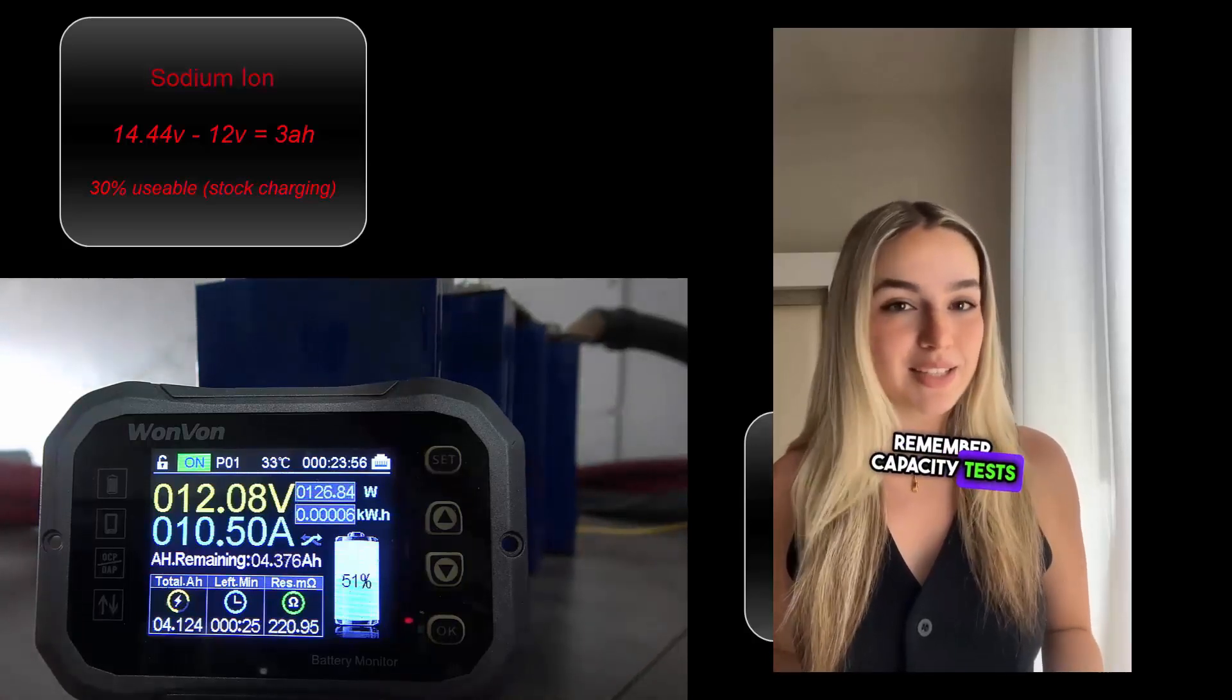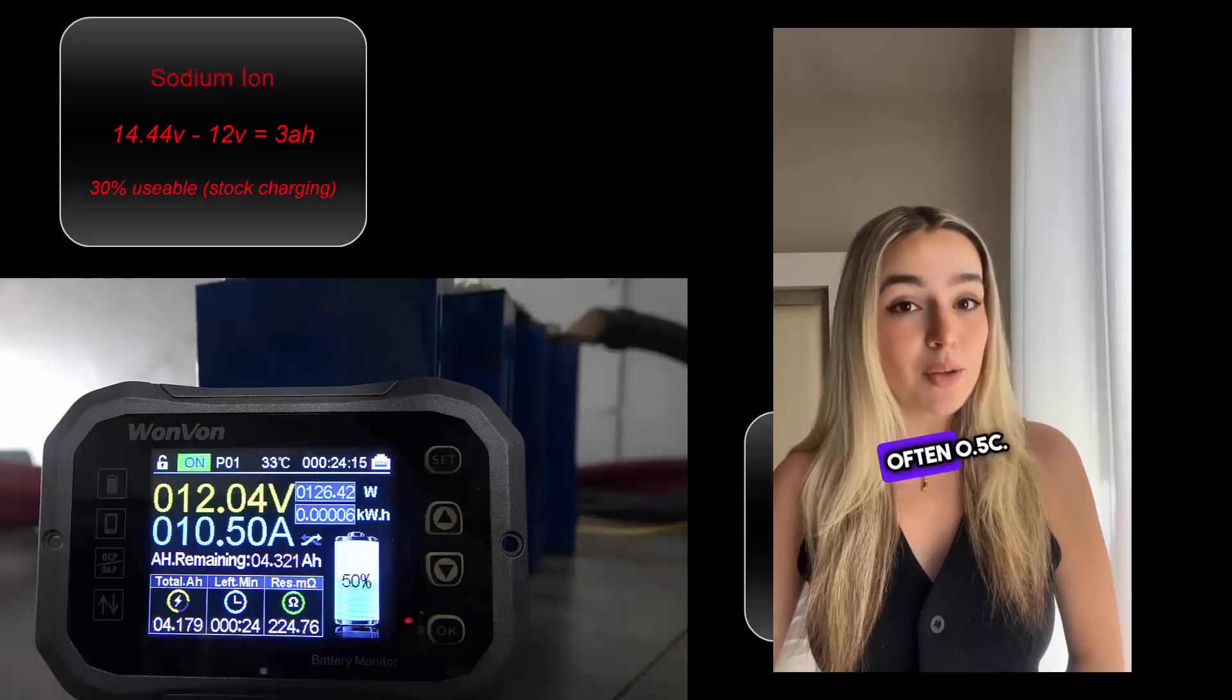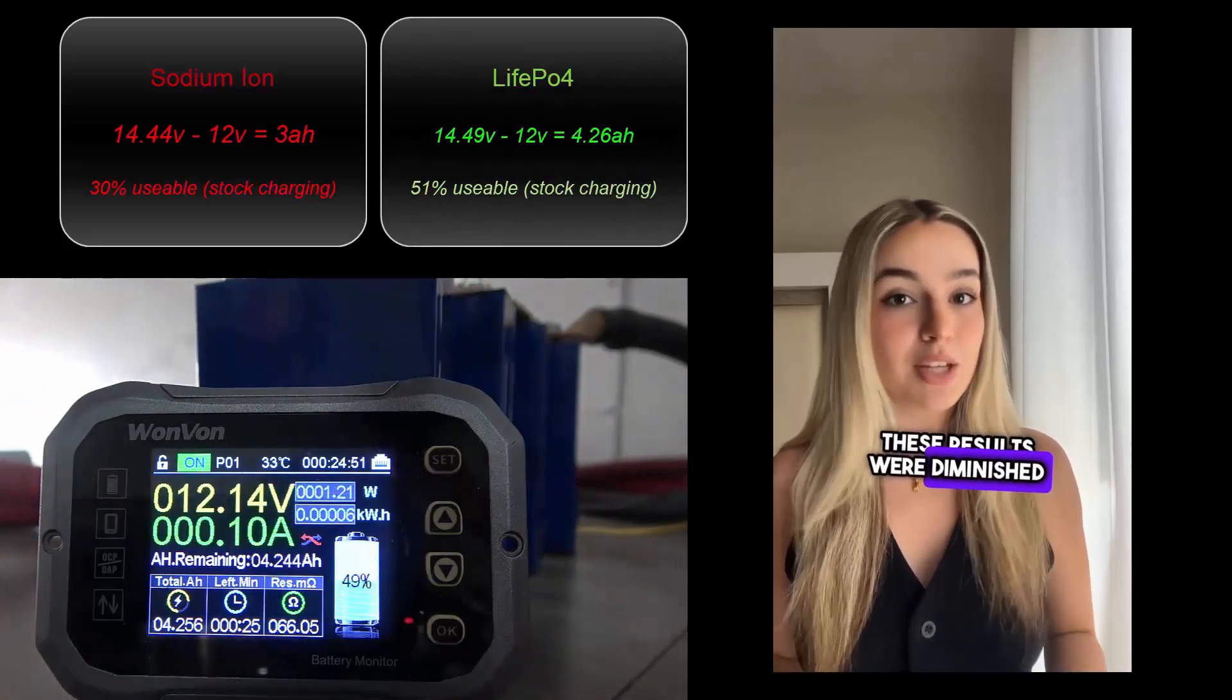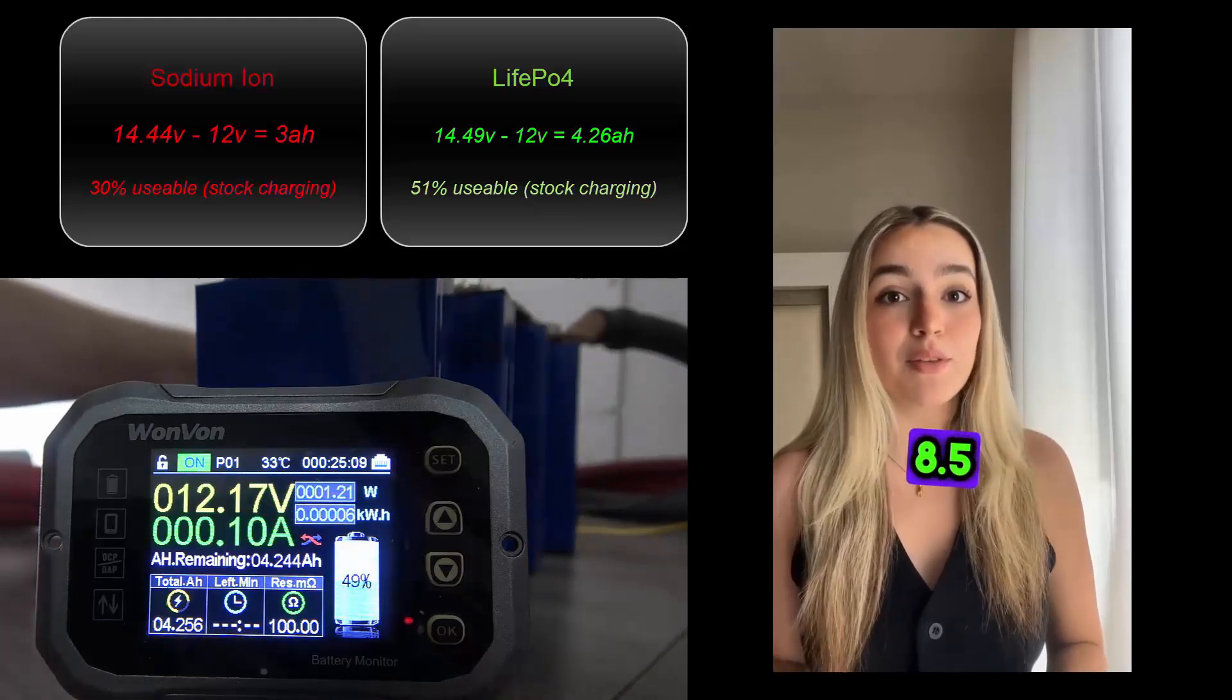Remember, capacity tests are generally done at 1C and often 0.5C. By pulling 1.3C, these results were diminished and would be higher doing a test at 8.5 amps of current.